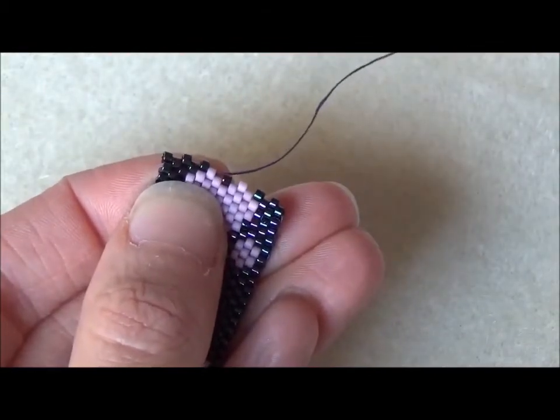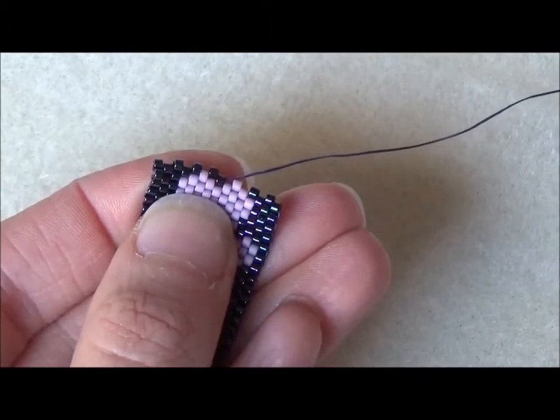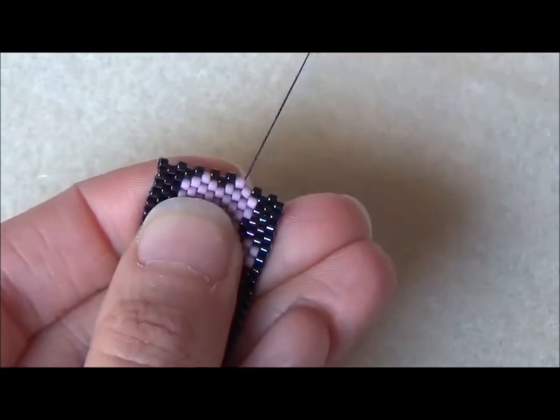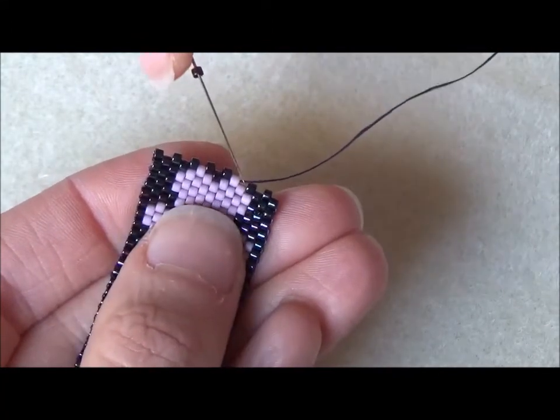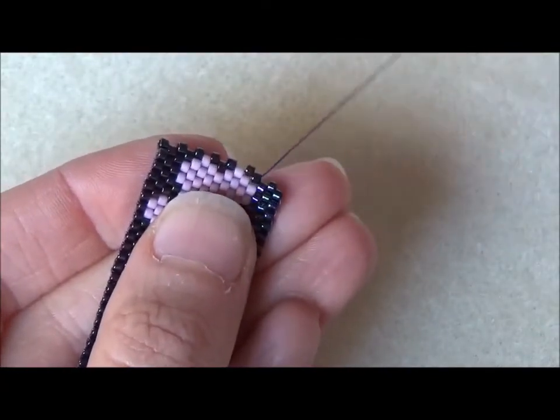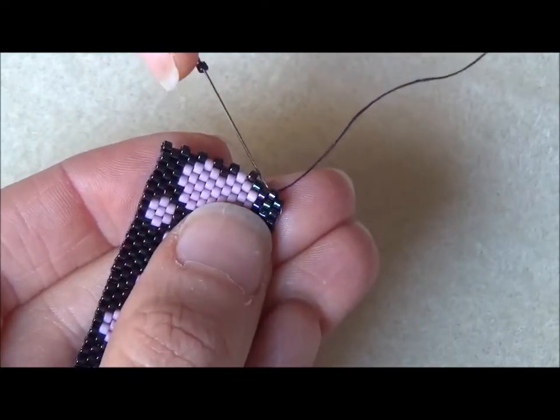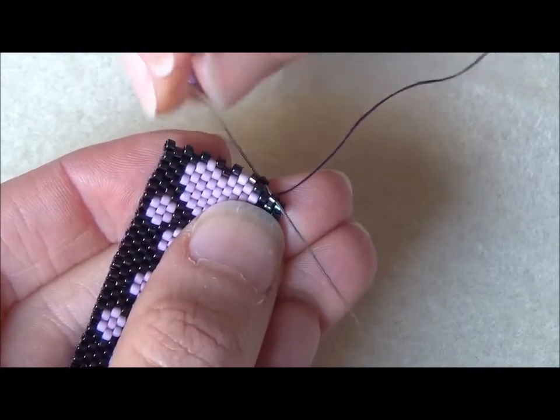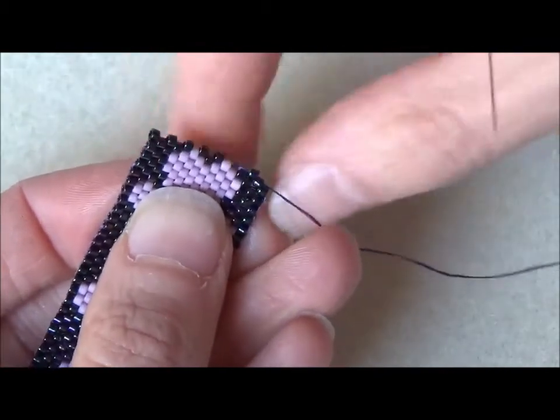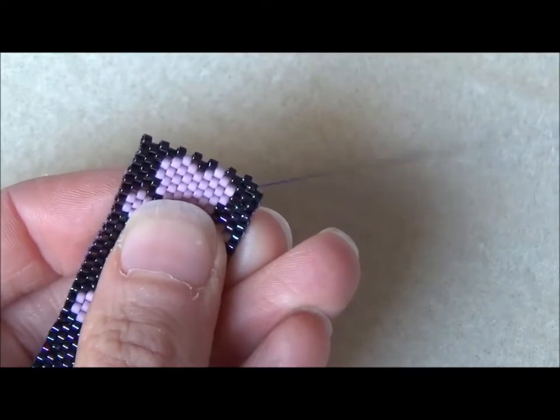The nice thing about odd count peyote stitch is that it allows you to do symmetrical designs. Our night owl kit uses symmetrical design. It's really nice because it means you have an even border edge around something. Particularly features where there's faces and things, you often have a center point that you work out from rather than even count.